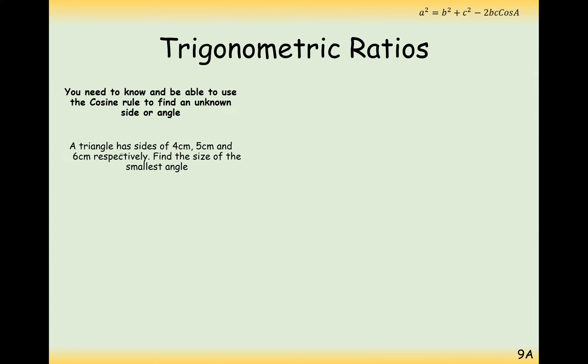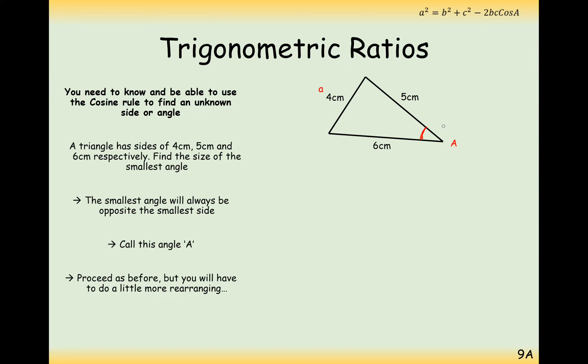So let's go through a little starter question here. If we have the sides of 4, 5 and 6 centimeters respectively find the size of the smallest angle. Let's draw out a little diagram first. And we can clearly see here from this diagram that if that's the shortest side then its opposite angle is going to be the smallest angle. So we'll need to call this angle A.